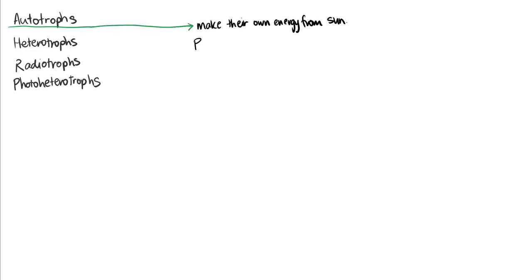Okay, so autotrophs. They make their own energy from the sun using photosynthesis. The equation for photosynthesis is carbon dioxide plus water. With sunlight we'll go to glucose and oxygen.